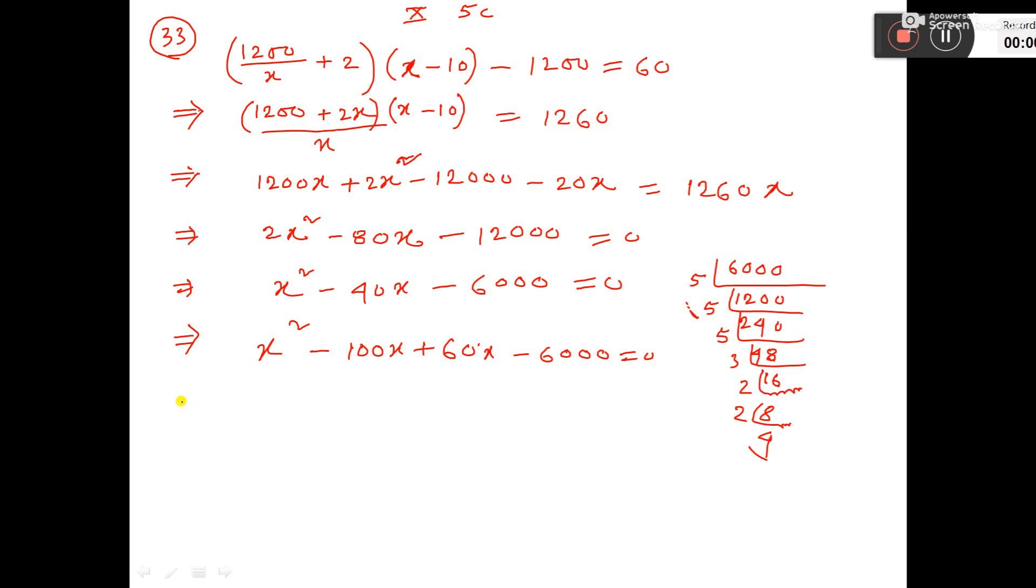From first 2 you take x comma. Then it is x minus 100. You take 60 common then x minus 100.